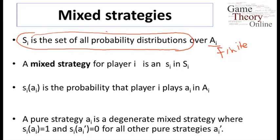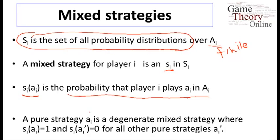A mixed strategy for a player is a choice of a particular probability distribution. The notation we'll use is that SI of AI is the probability with which player I plays a particular action, keeping track of what probability they're playing each action with. Pure strategies can be thought of as degenerate mixed strategies where you put probability one on a particular action — they are just special cases of mixed strategies.